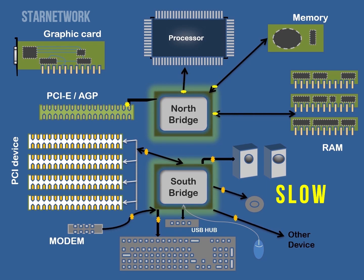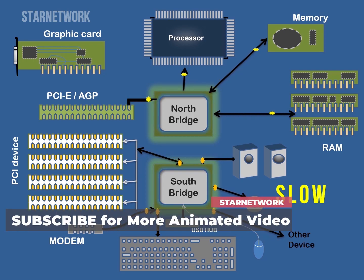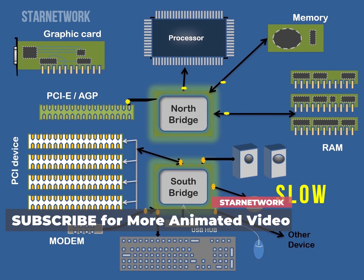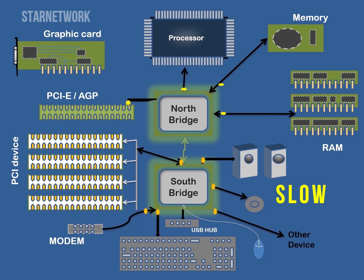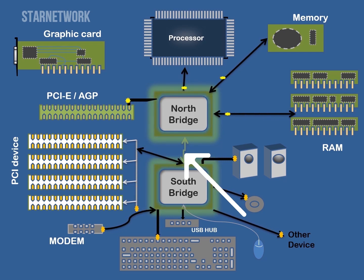The South Bridge handles the motherboard's slower networks, including input/output devices and computer peripherals like expansion slots and hard disk drives — such as PCI bus slots for expansion cards, SATA and IDE connectors for hard drives, USB ports, onboard audio and networking, and more.